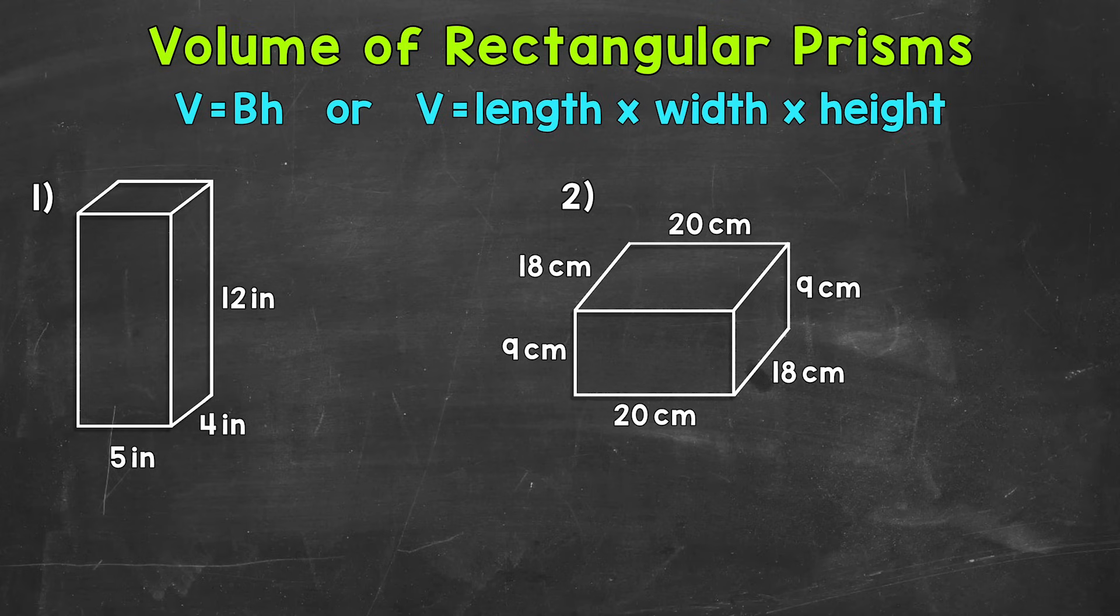The capital B stands for the area of the base, and then the H stands for the height. But since we're going to specifically be working with rectangular prisms, we know that our base will be a rectangle. The formula for the area of a rectangle, which again is our base, is length times width.